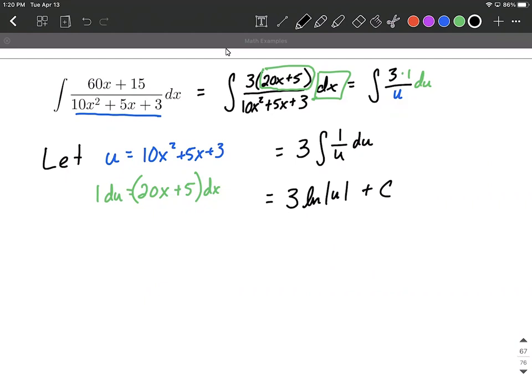what we're going to do is go back to our last statement, do the natural log of, instead of u, we can replace that back in with 10x squared plus 5x plus 3 with the plus C at the end.